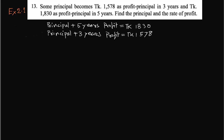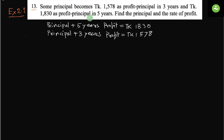Assalamu alaikum, greetings from Talent of Skill. Class 8 English version math, exercise 2.1, problem number 13. A principal becomes taka 1578 as profit plus principal in three years, and taka 1830 as profit plus principal in five years. Find the principal and the rate of profit. Pretty simple math — we have to find out two things.